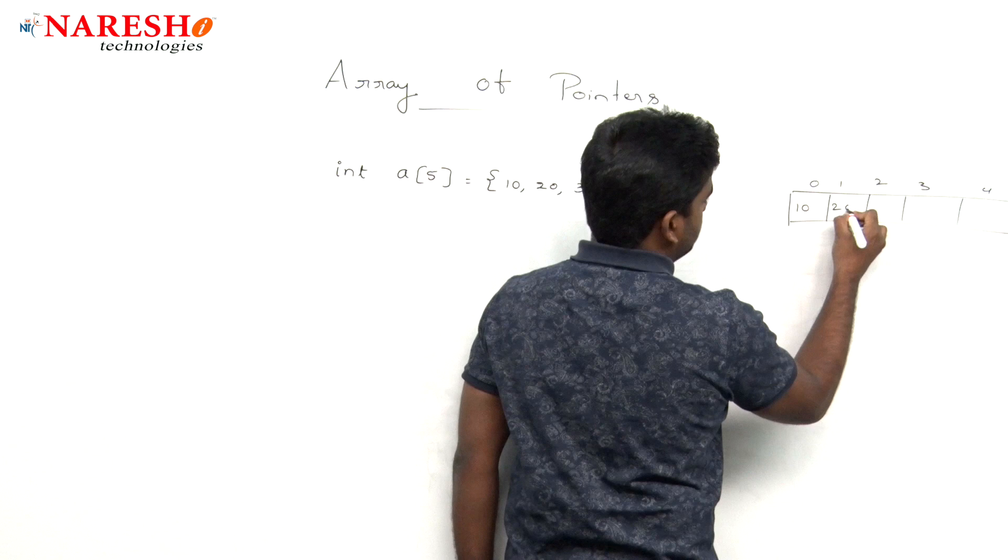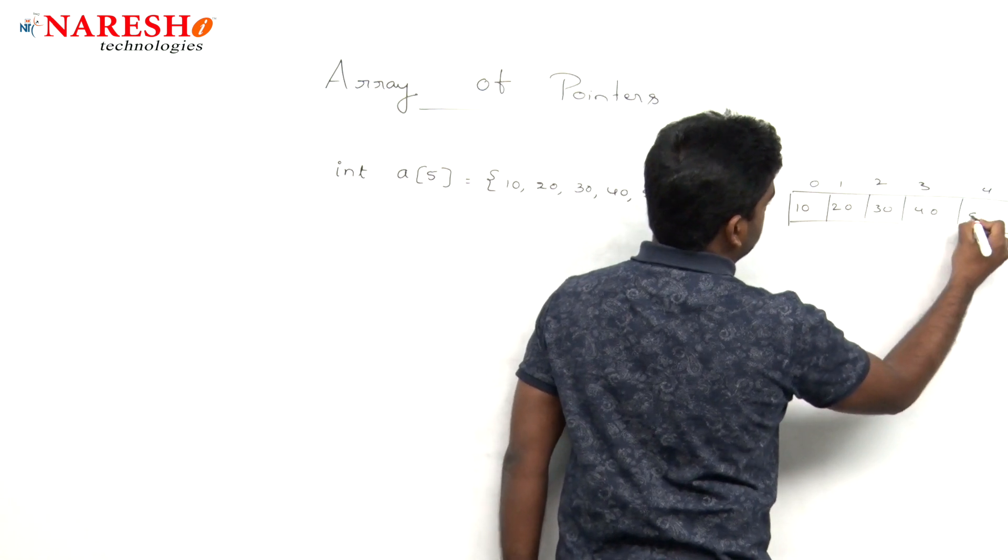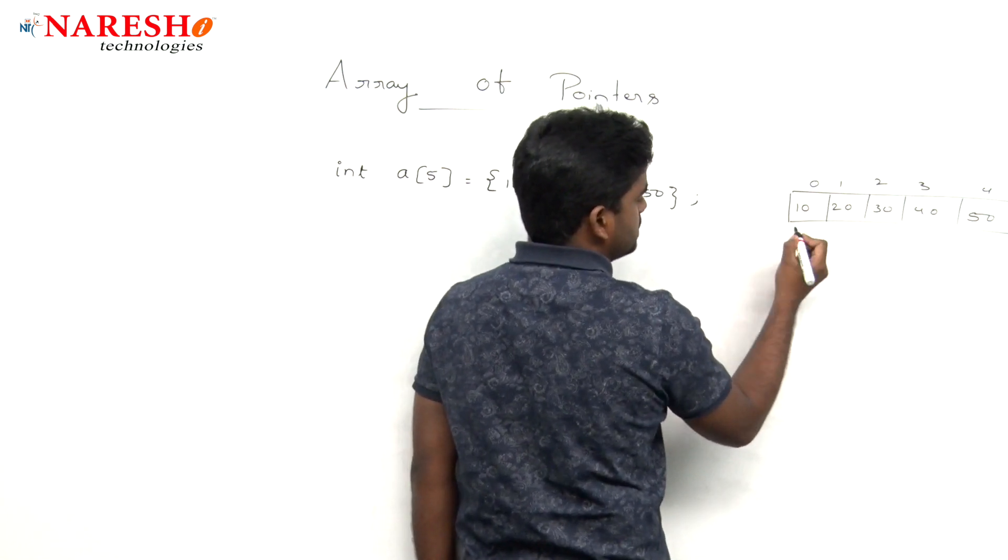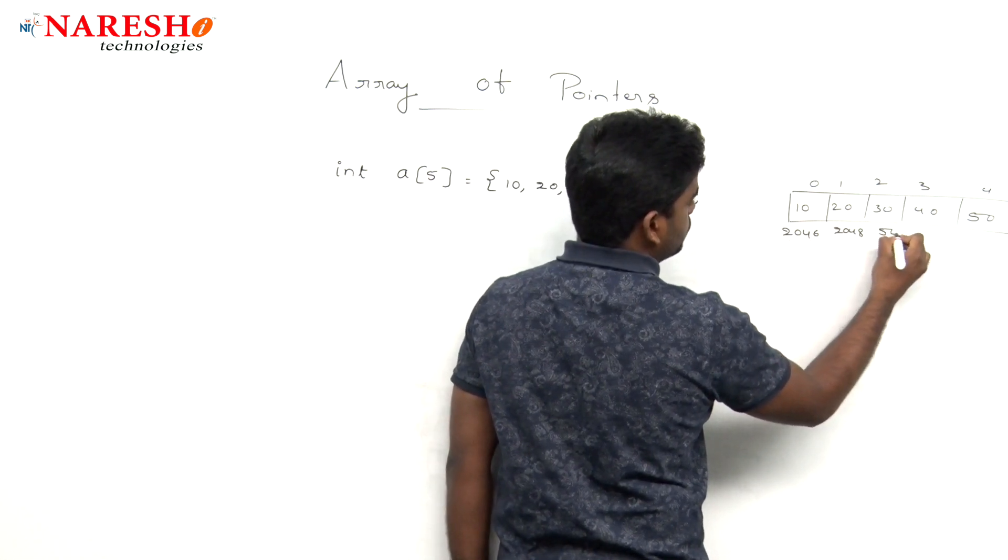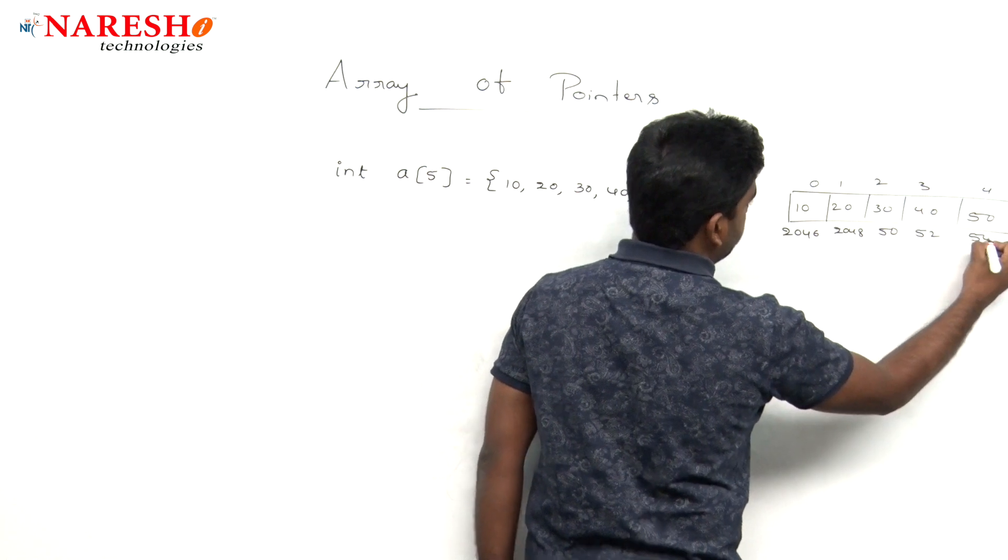The elements are 10, 20, 30, 40, 50, and those locations, for example, start with 2046, location 2048, 2050,